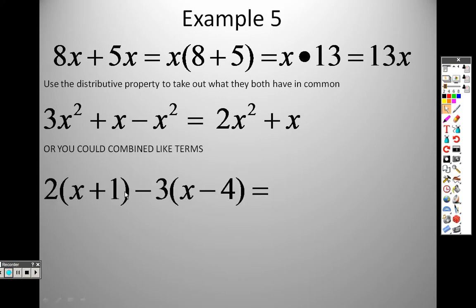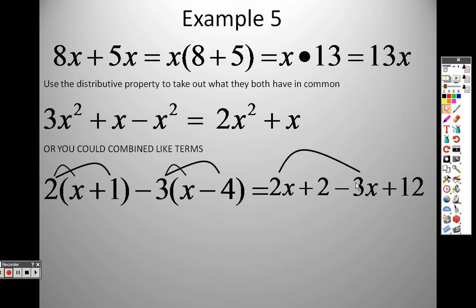In this problem, I need to use the distributive property. So, to use the distributive property, I should take 2 times x and get 2x, and 2 times 1 and get positive 2. Then I take the negative 3. Negative 3 times x is negative 3x. Negative 3 times negative 4 is positive 12. So, now I can combine my like terms. I have 2 x's and negative 3 x's, so I have a negative x. And 2 and 12 is 14. And there's your answer. Negative x plus 14. We're just combining like terms.